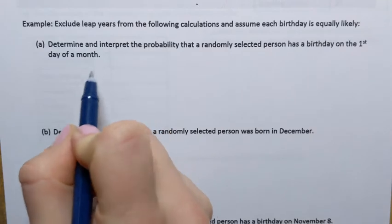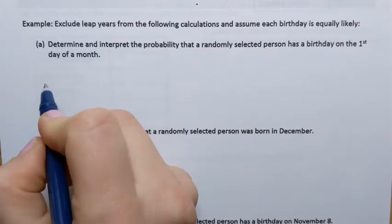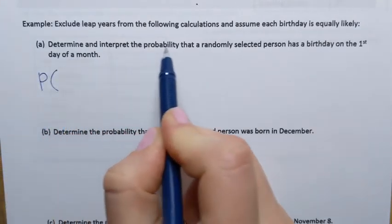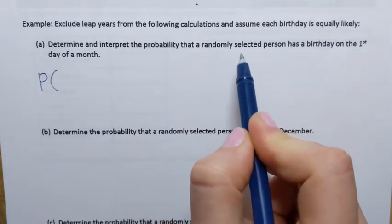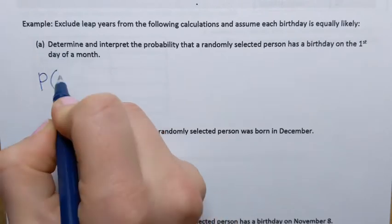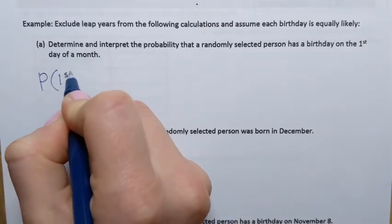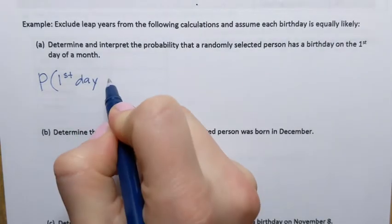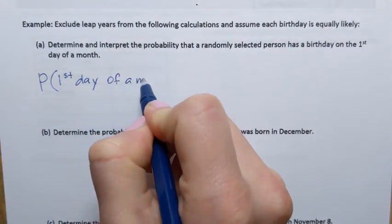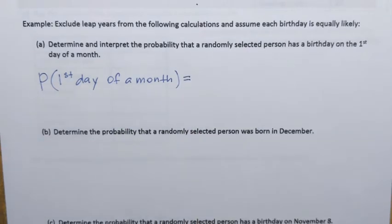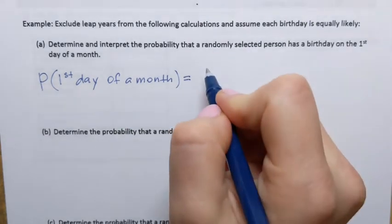Let's first write this question using notation. P stands for probability, and we want to find the probability that a randomly selected person has a birthday on the first day of a month.